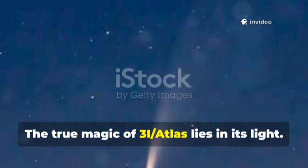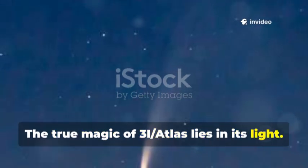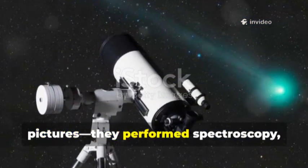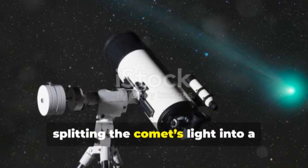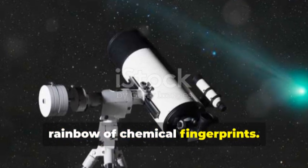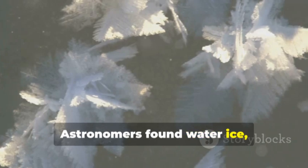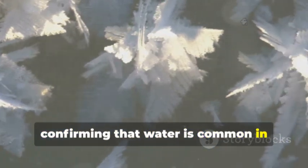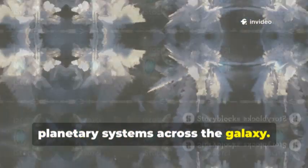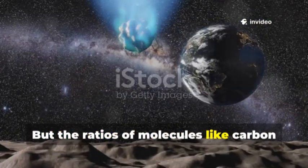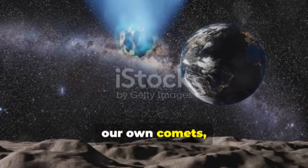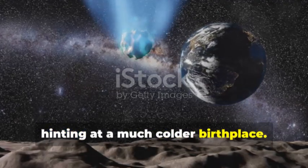The true magic of 3i-Atlas lies in its light. Webb's instruments didn't just take pictures, they performed spectroscopy, splitting the comet's light into a rainbow of chemical fingerprints. Astronomers found water ice, confirming that water is common in planetary systems across the galaxy. But the ratios of molecules like carbon monoxide were strikingly different from our own comets, hinting at a much colder birthplace.